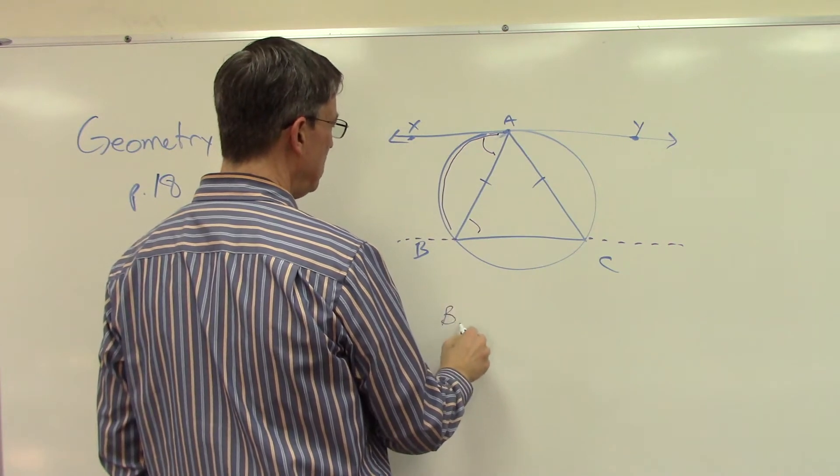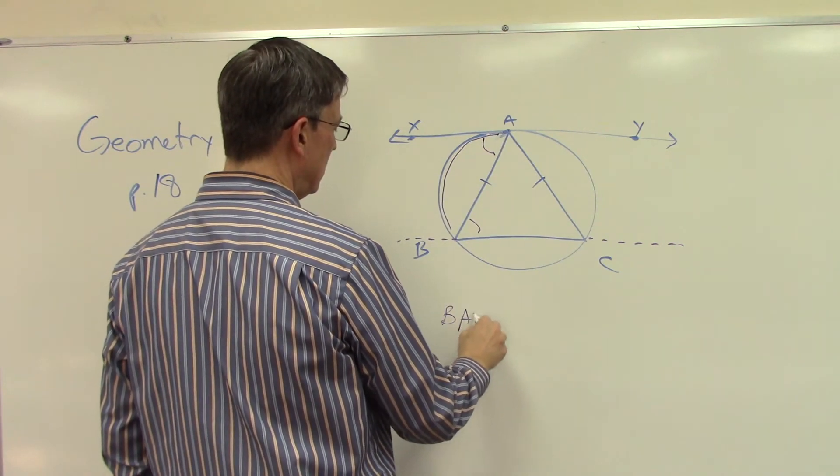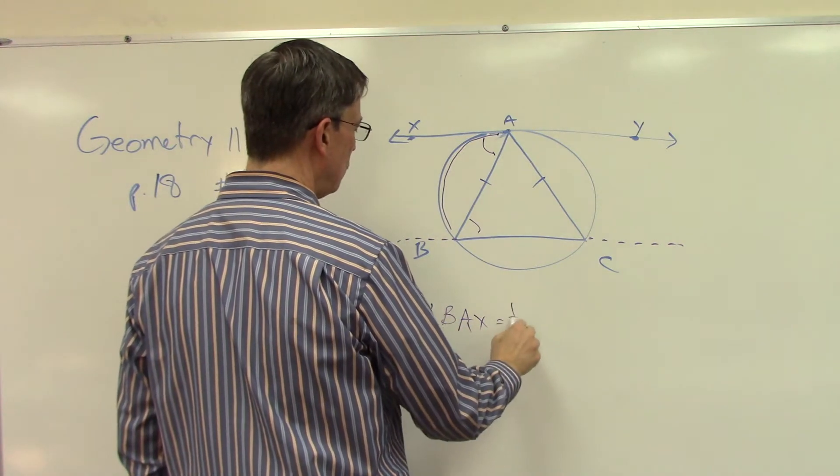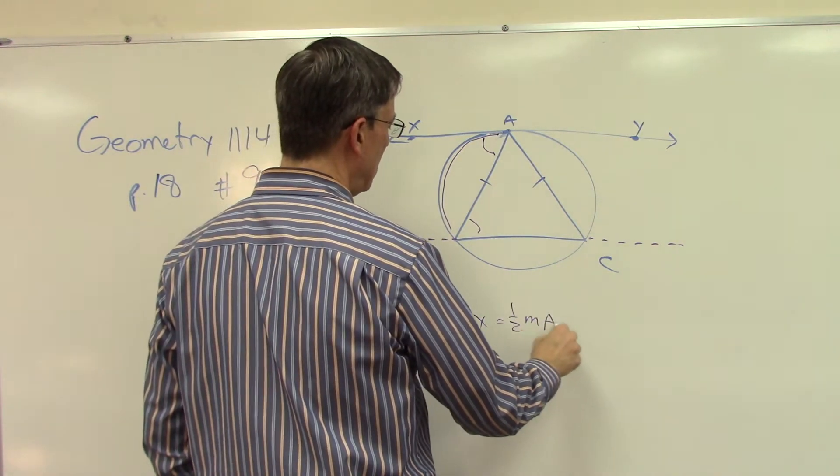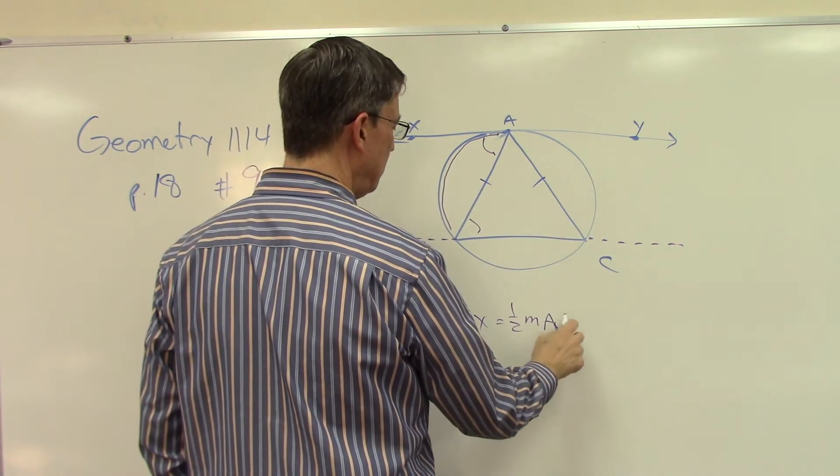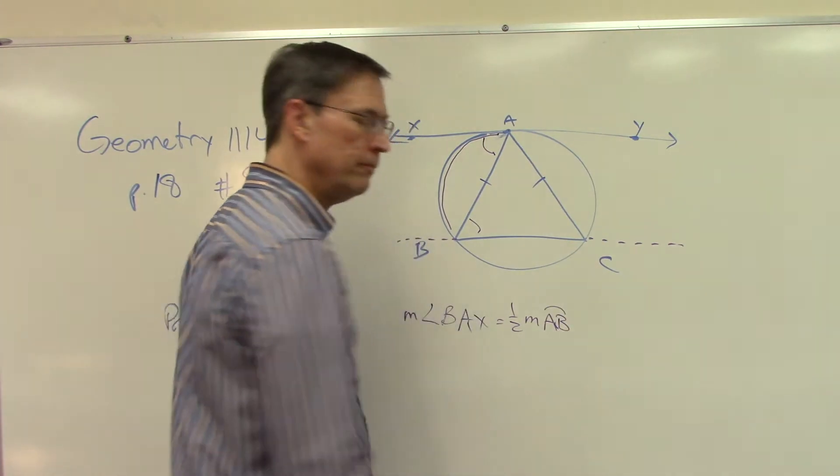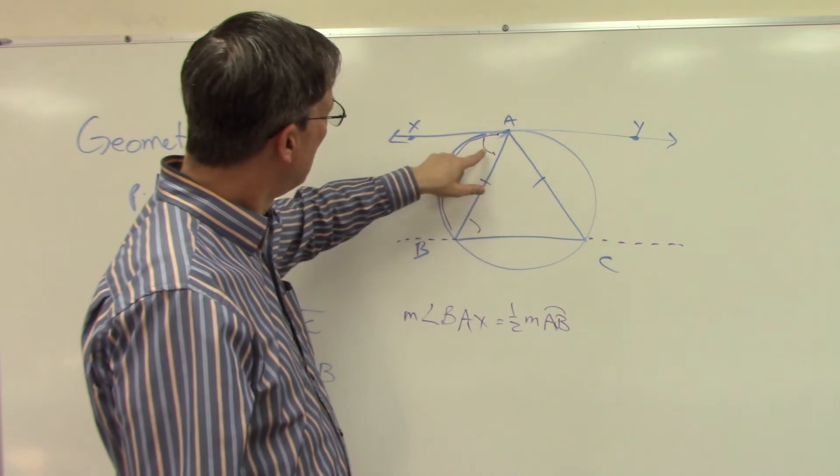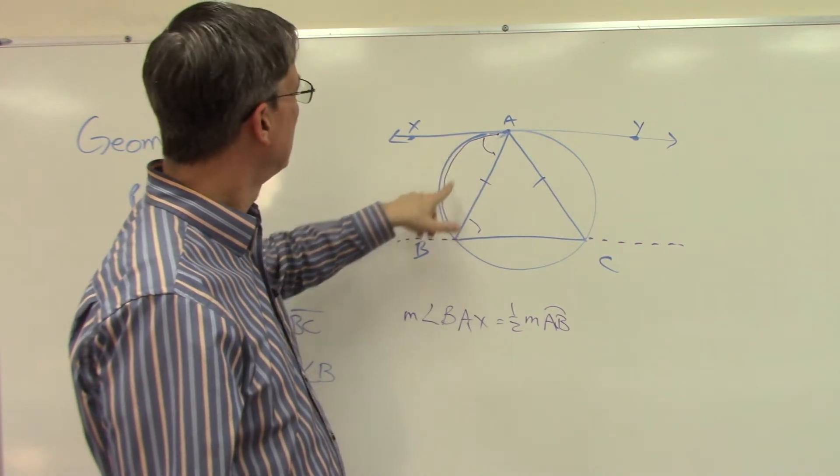So we can call that angle BAX. The measure of angle BAX is equal to one half the measure of the intercepted arc AB. So that's theorem 58 that gives us that.